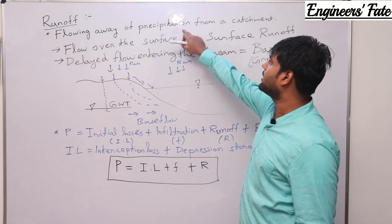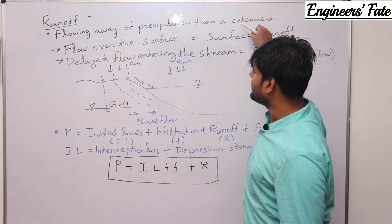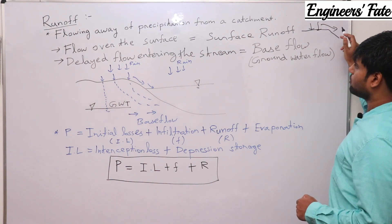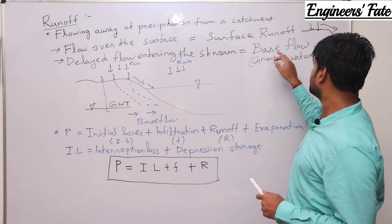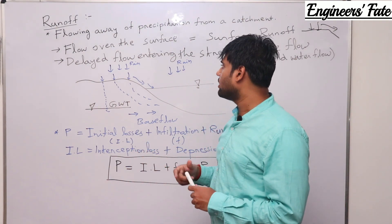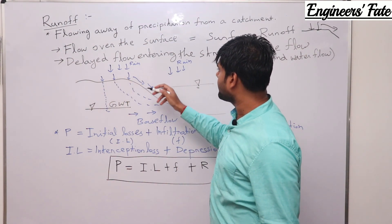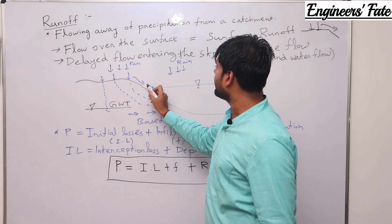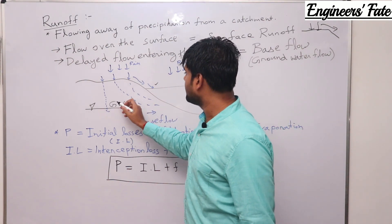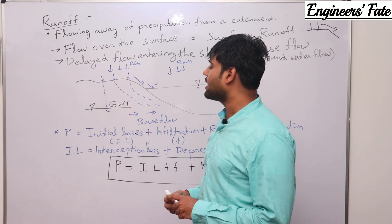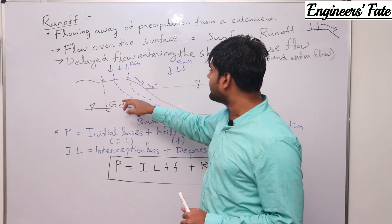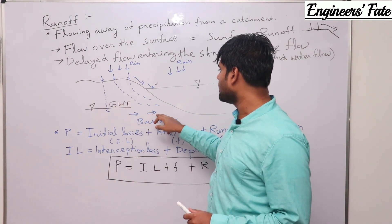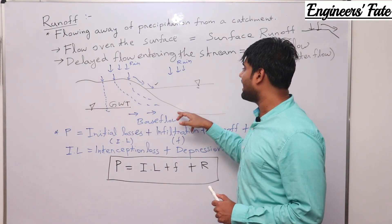Runoff is the flowing away of precipitation — precipitation being rain — from a catchment. Flow over the surface is known as surface runoff, and delayed flow entering the stream is known as base flow. Delayed flow means: the water that infiltrated into the ground won't immediately meet the stream — after some amount of time it will flow underground and meet the stream. That is known as base flow. The use of base flow will be studied in detail in hydrographs.